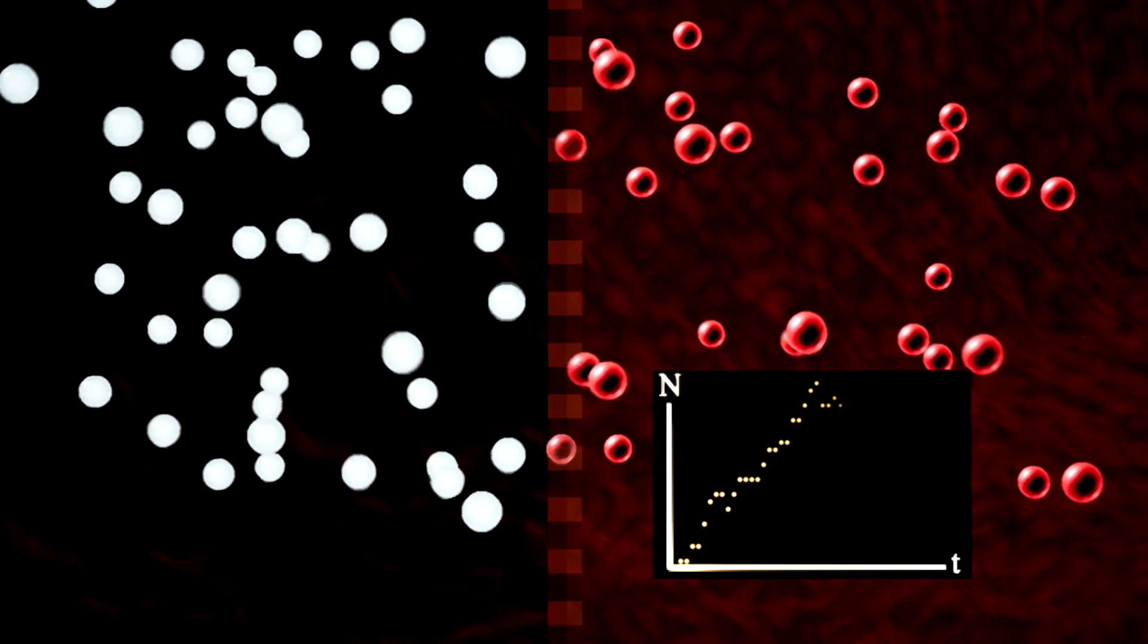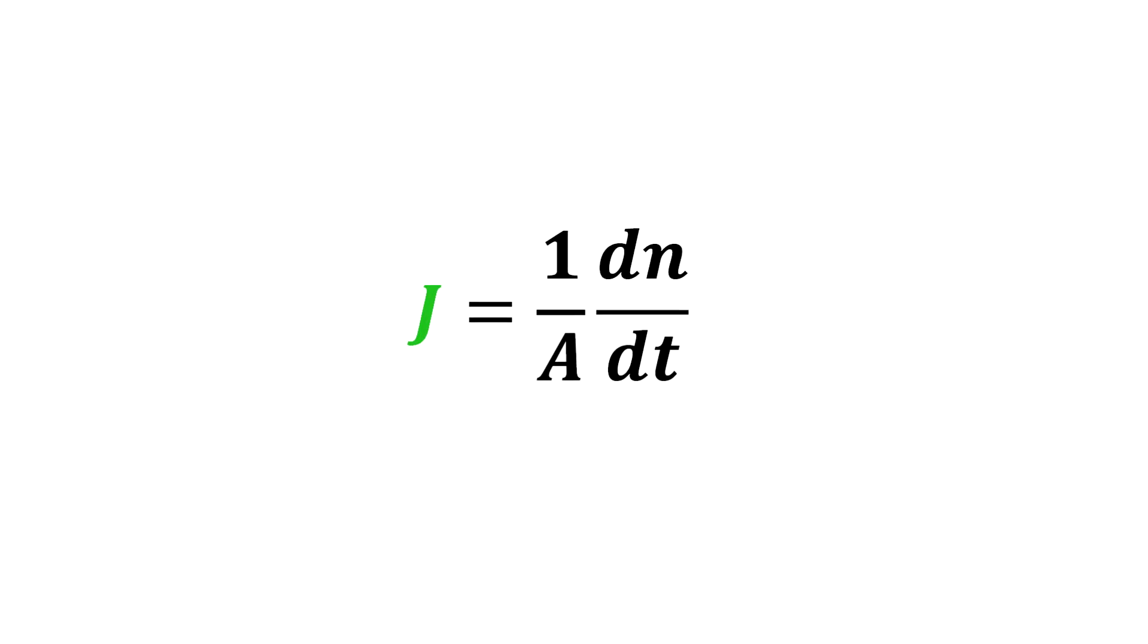We can now define a quantity known as flux, which is represented by the letter J. The flux is defined as the rate of flow, dn dt, per unit area A across the membrane.